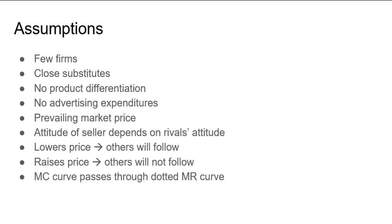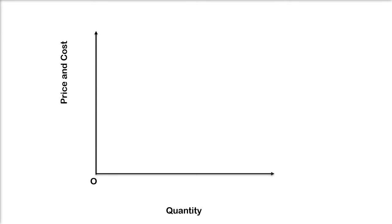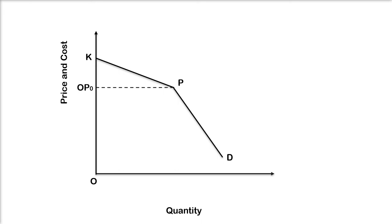Given these assumptions, the price-output relationship in the oligopolistic market is explained in the following diagrams. Here, KPD is the kinked demand curve. OP0 is the prevailing price in the oligopoly market for the output of one seller.